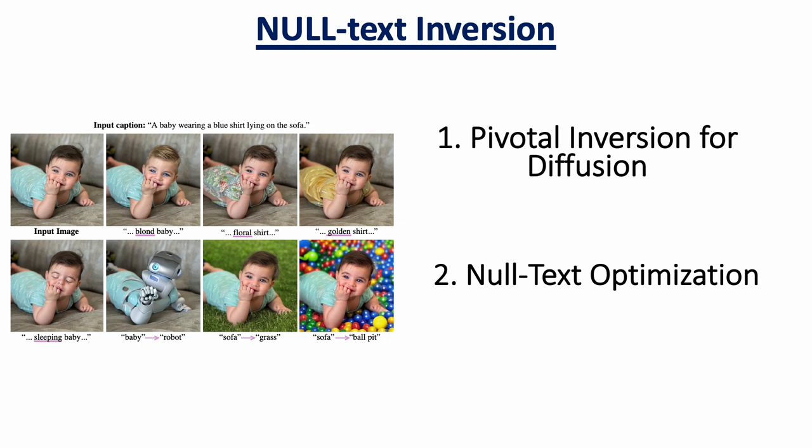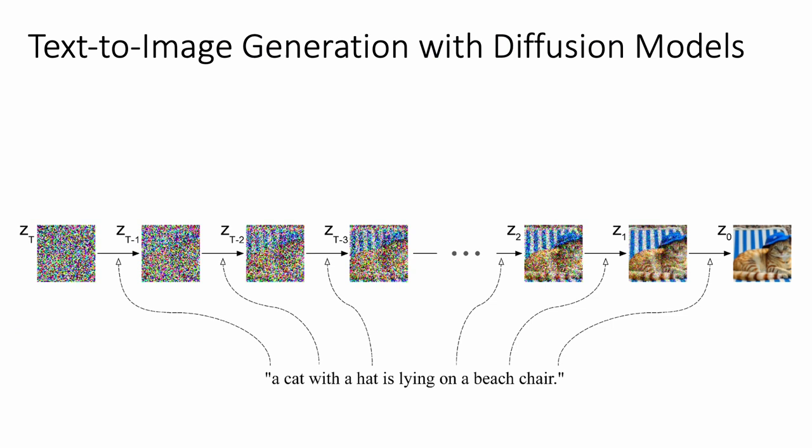Our main observations are to optimize only the null text embedding and use the DDIM inversion as a pivot for the optimization.